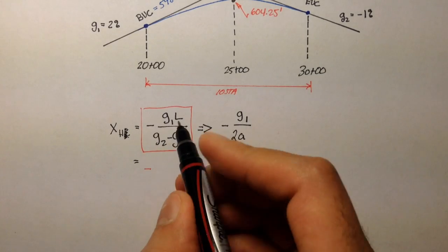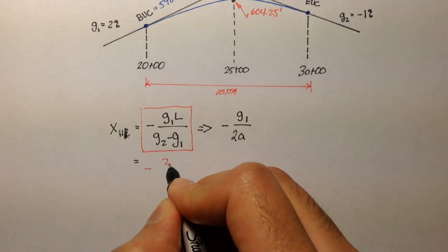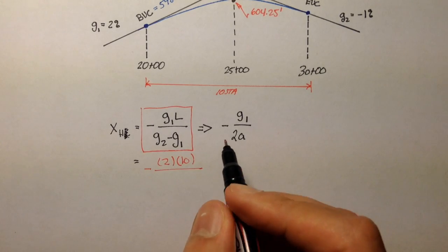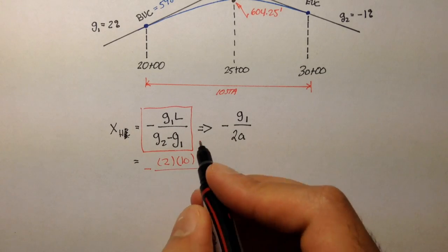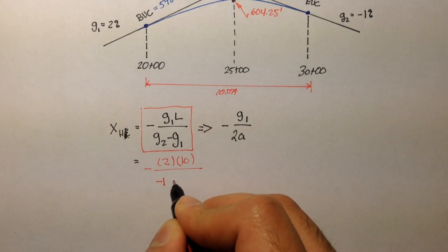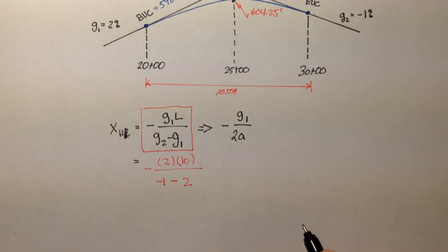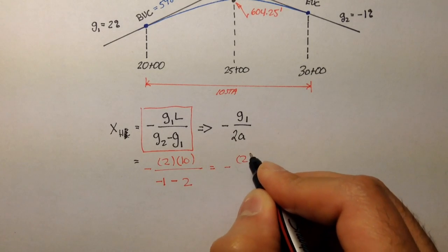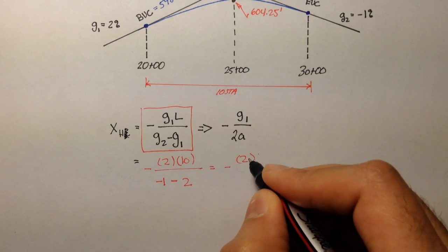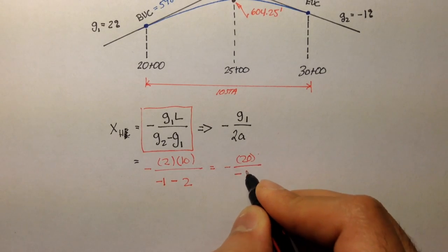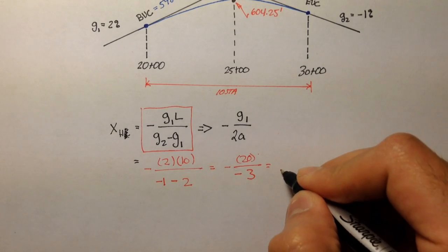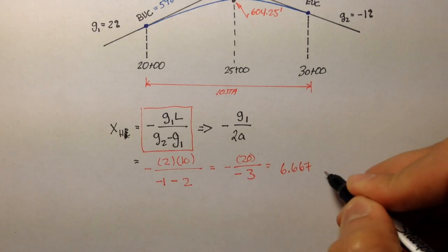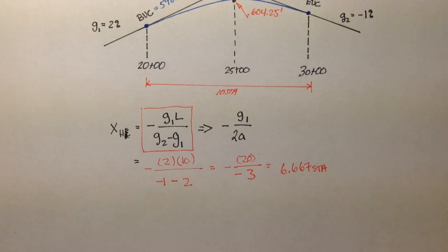So the first one is negative g1, which is 2, times l, which is 10 stations. The length of the curve is 10 stations, over g2 minus g1. g2 is negative 1 minus grade 1, which is 2. So once you do this math, you'll see that it's negative 20 over negative 3. And if you divide that out, you'll get the highest point is located at 6.667 stations from BVC.